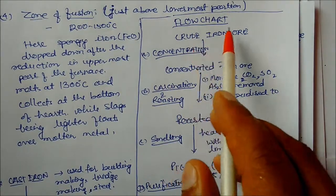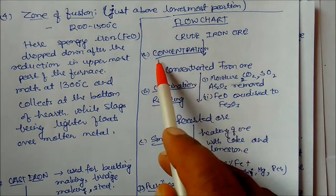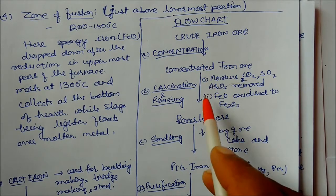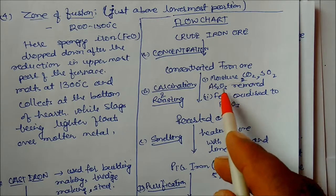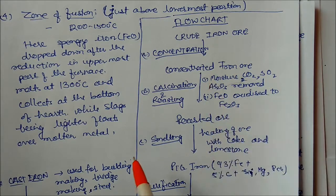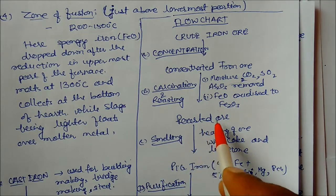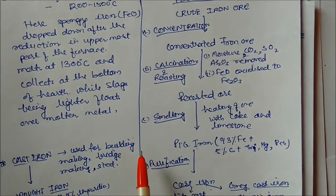Now the flow chart summary: crude iron ore is taken and concentrated (concentration process). The concentrated iron ore is converted to roasted iron ore, during which moisture, CO2, SO2, arsenic oxide are removed and iron oxide is oxidized to Fe2O3. Then Fe2O3 is reduced by carbon monoxide, after which the roasted ore becomes pig iron.